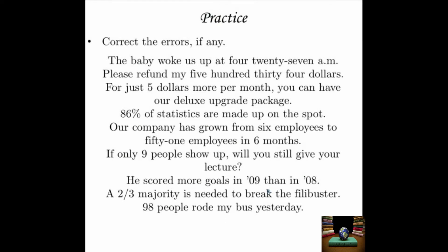Now that we've got all these rules in your head, let's do some practice. See if you can figure out where, if anywhere, there are errors in these sentences. Some have numerals that should be spelled out; some have spelled-out numbers that should be numerals. The sentences are: "The baby woke us up at 4:27 a.m." — "Please refund my $534." — "For just $5 more per month, you can have our deluxe upgrade package." — "86 percent of statistics are made up on the spot." — "Our company has grown from six employees to 51 employees in six months." — "If only 9 people show up, will you still give your lecture?" — "He scored more goals in '09 than in '08." — "A two-thirds majority is needed to break the filibuster." — "98 people rode my bus yesterday."